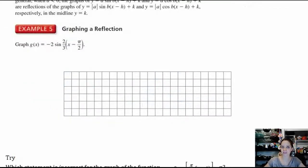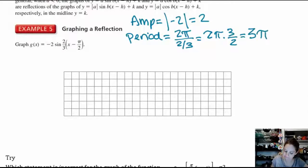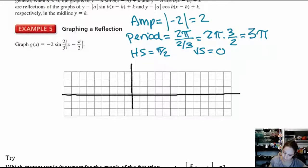Example 5, graphing a reflection. Graph g(x) = -2 sin(2/3 x - π/2). Step 1 is the same. Amplitude is the absolute value of a, so the absolute value of negative 2 is 2. The period is 2π over b. 2π over our b value is 2/3. This is really 2π times 3/2. And our period is 3π. Our horizontal shift is π/2. And our vertical shift is 0. I'm going to draw the axes. And now I've got to identify, well, first draw the midline, but the vertical shift is 0, so the midline is just the x-axis.